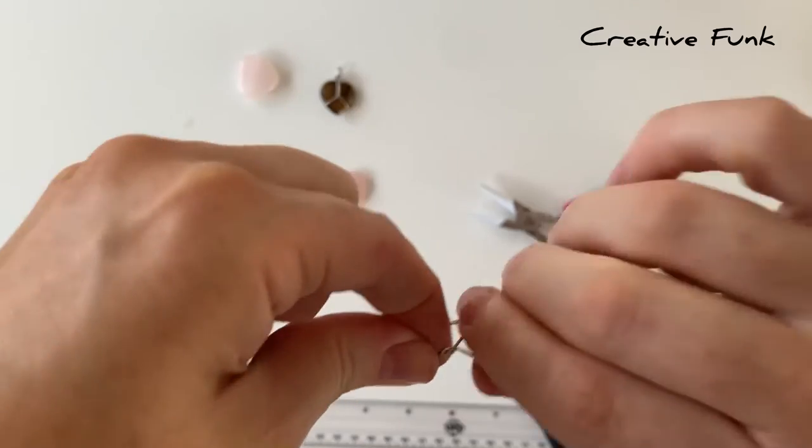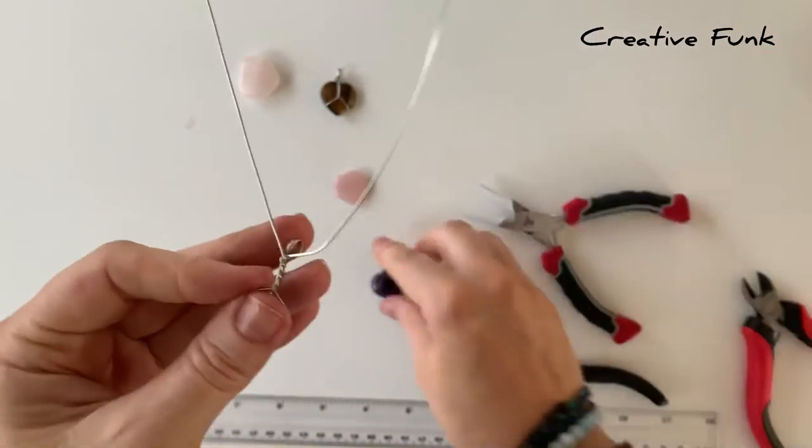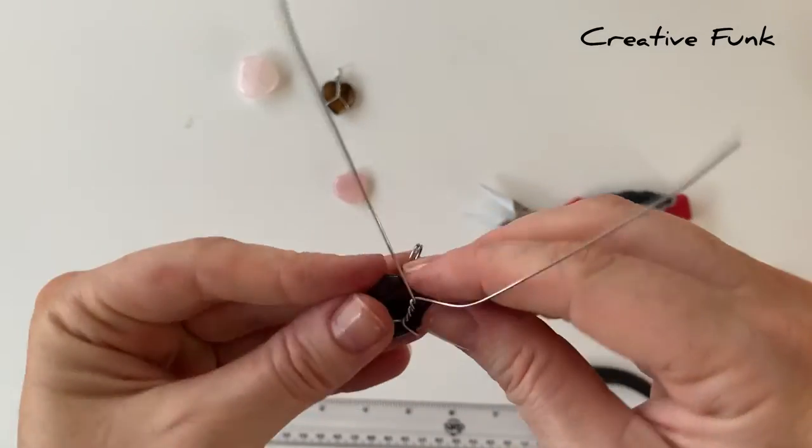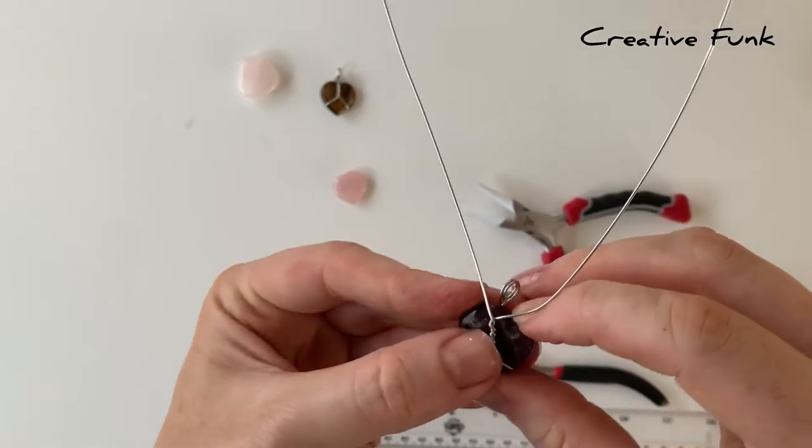In theory it should be about six half twists if that's what you did on the other side, but it could be five or seven maybe. You just want to be able to meet up with the bail nicely at the top.